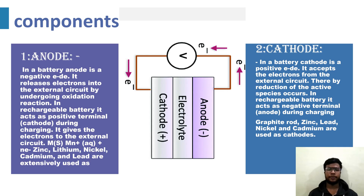Anode: In a battery, the anode is a negative electrode. It releases electrons into an external circuit by undergoing an oxidation reaction. In a rechargeable battery, it acts as the positive terminal during charging.